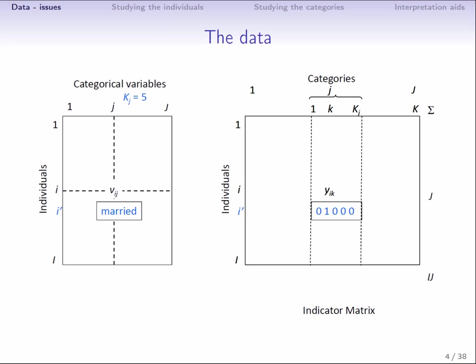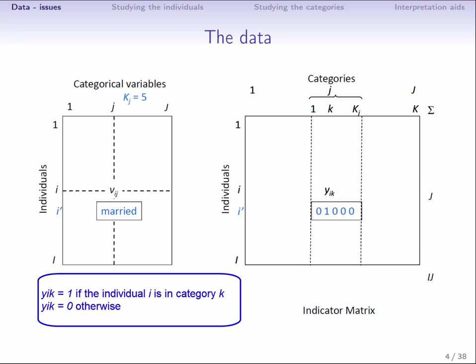To start to understand the structure of the complete disjunctive table, we're going to calculate its margins. Let's start with the column margin. We calculate the sum of the terms of row i and remember that yi k equals 1 if the individual is in category k and 0 otherwise. So, for each block of columns corresponding to one variable, we have one and only one entry with a 1 in it. Therefore, summing over all the columns, we simply get the number of variables that are J. The column margin is therefore a constant, the same for all individuals. And the sum of the values in the table is i times J, that is the number of individuals multiplied by the number of variables.